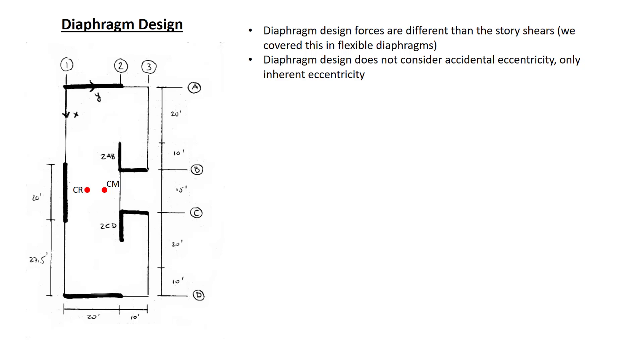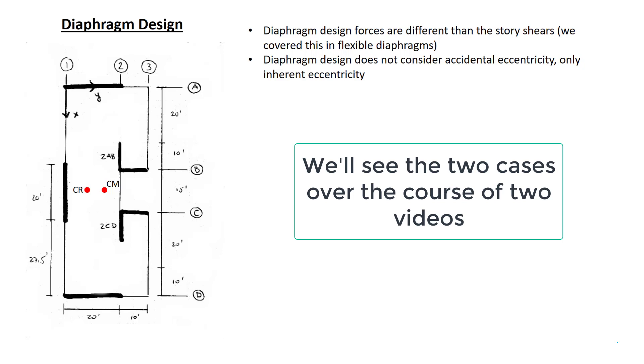First, diaphragm design forces are different than the story shears. We already saw this in flexible diaphragms. Just repeat the same process for rigid diaphragms. Second, when we consider diaphragm design, we don't consider accidental eccentricity, only inherent eccentricity. This means that in the case that the center of rigidity and center of mass are aligned, it's a fairly straightforward process. If they're not aligned, it gets a little bit more complicated. In this particular example, we'll be able to see both cases.